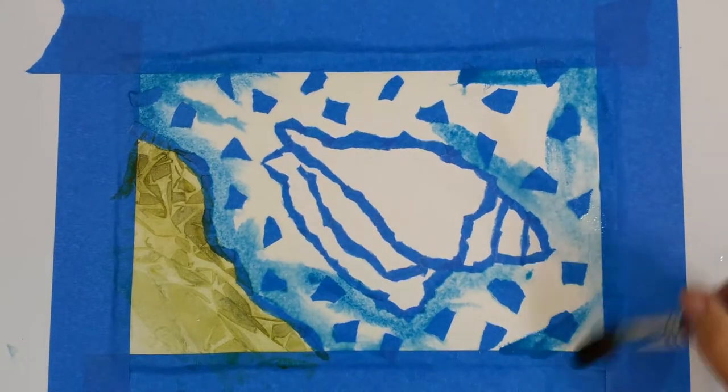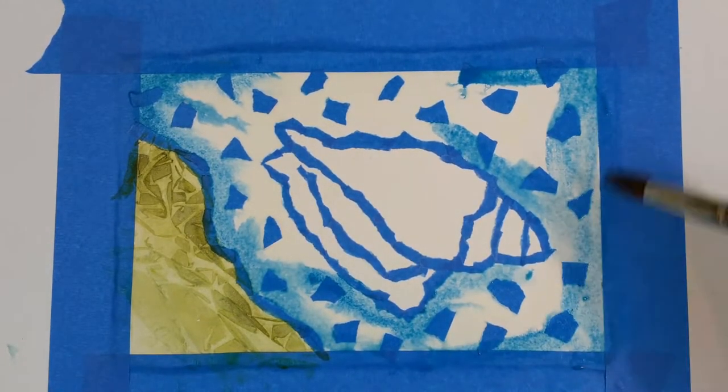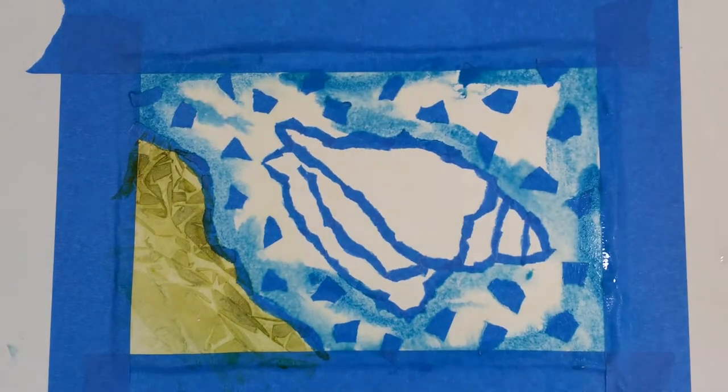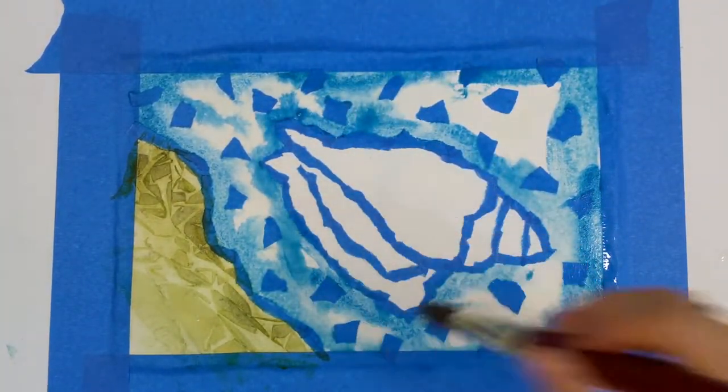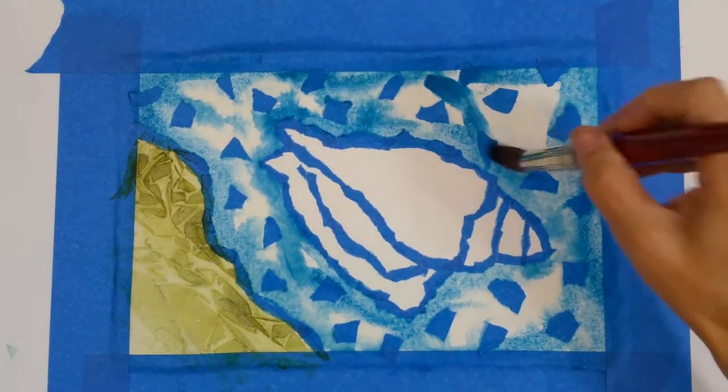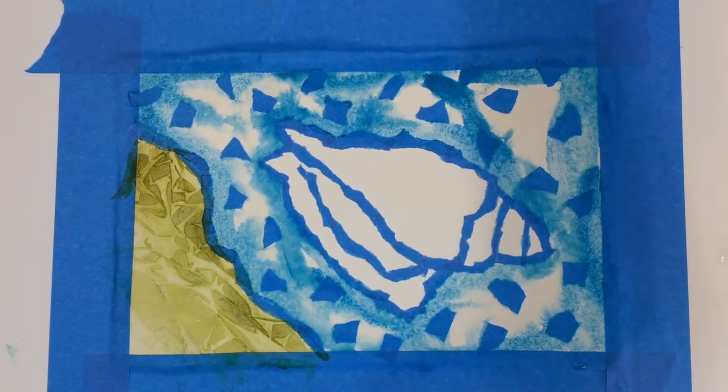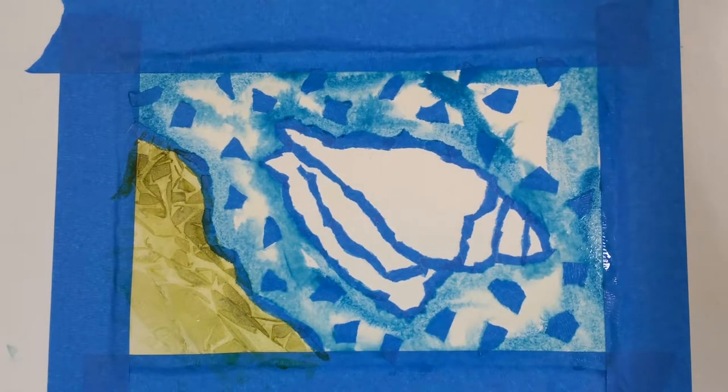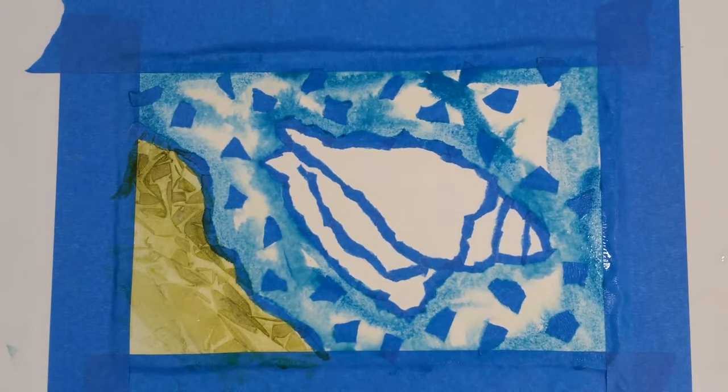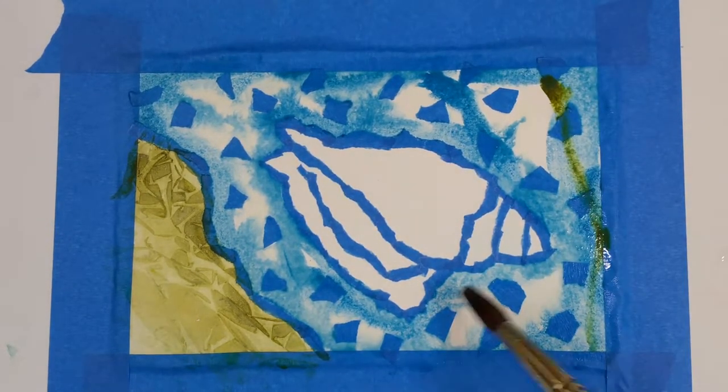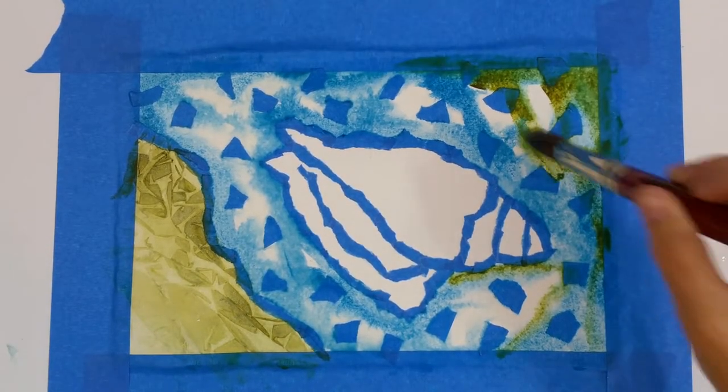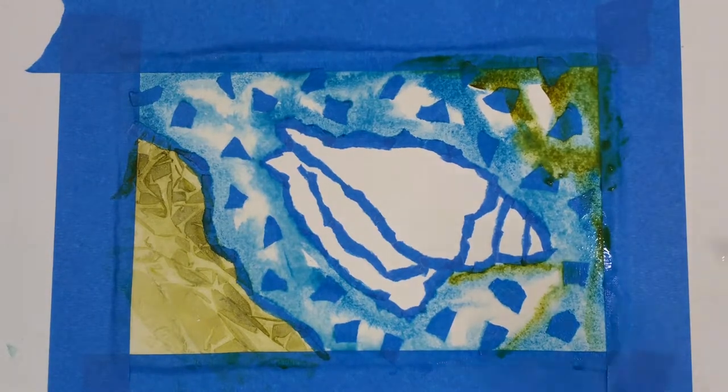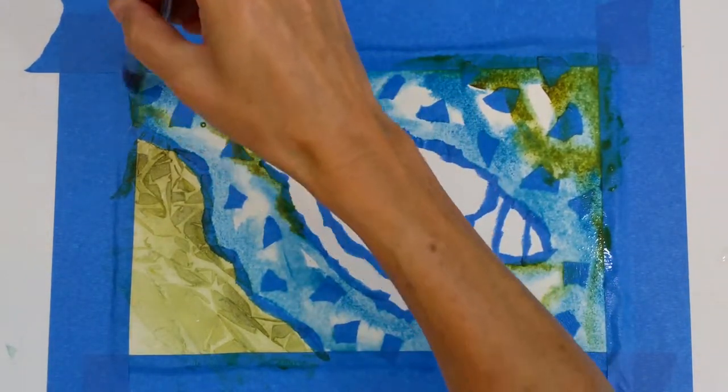And I like to put in darks and lights when I put in a wash. Some people like really even washes, and that's great. I like to vary it a bit just to create a little more depth. So now I'm loading up my brush with more color to just put a few more deeper blues in and adding a little bit of that olive green just to tie everything together so it doesn't look like two separate pieces.